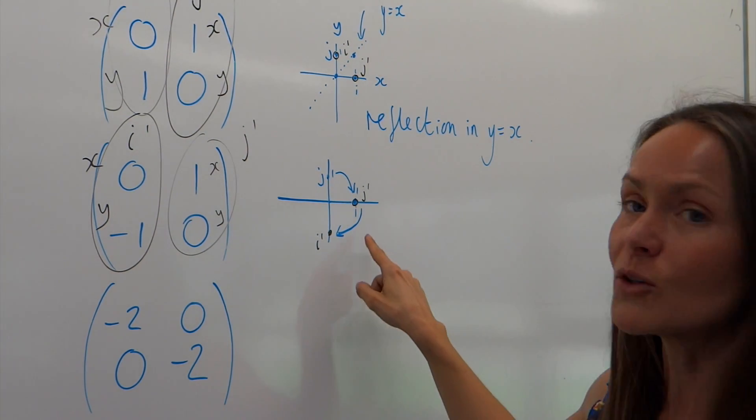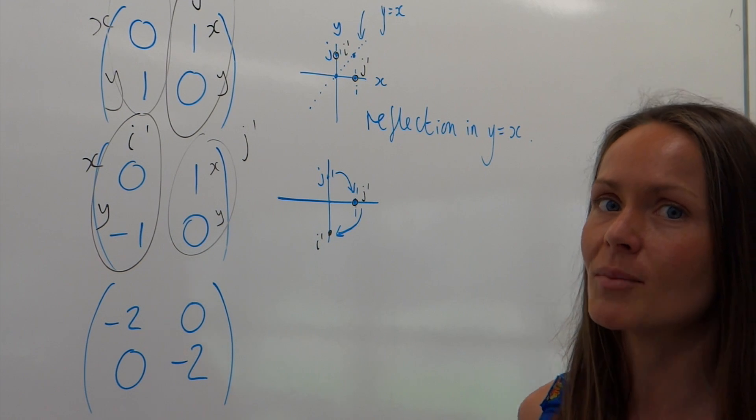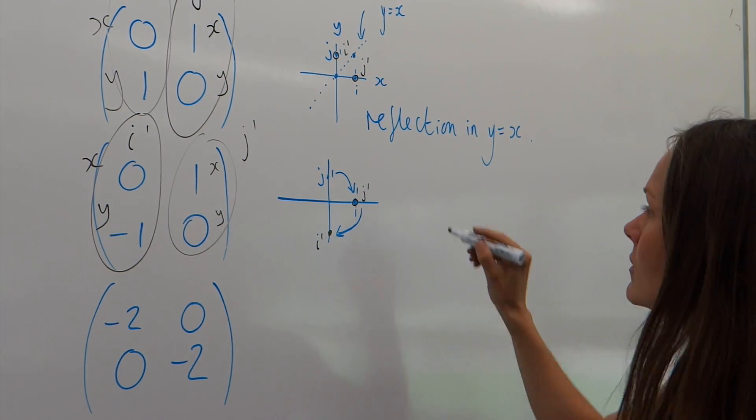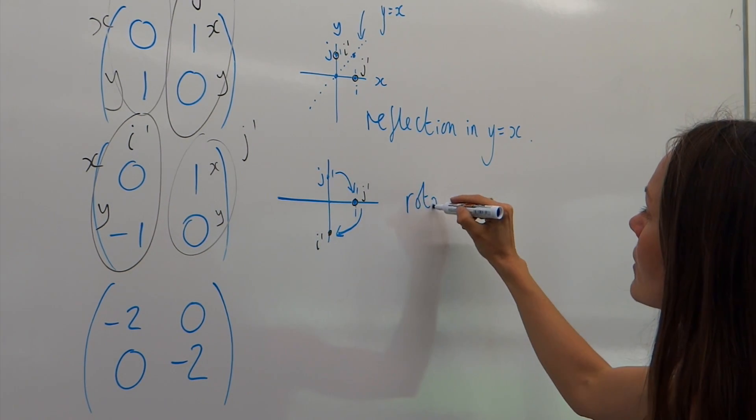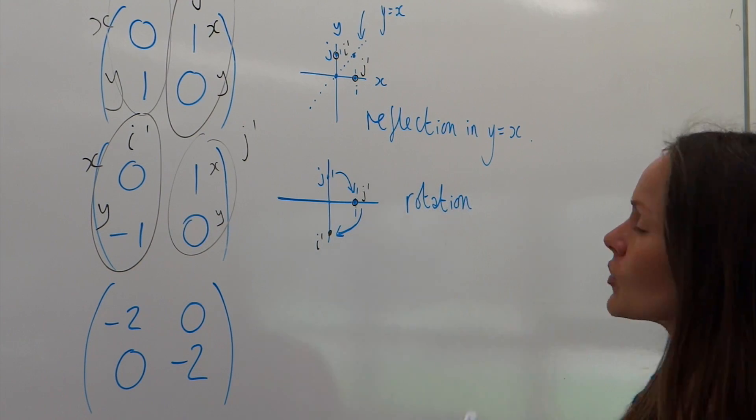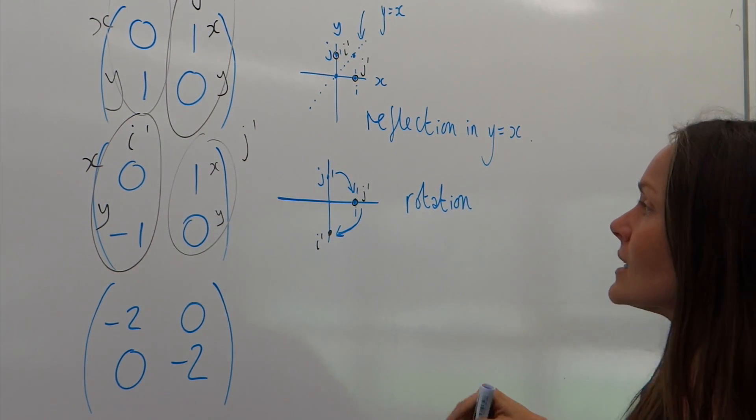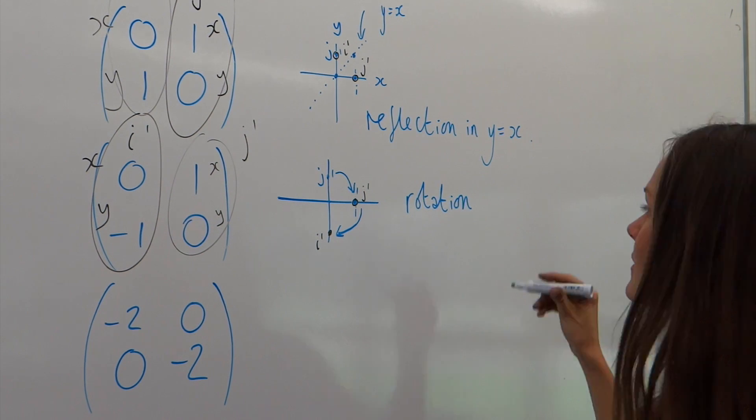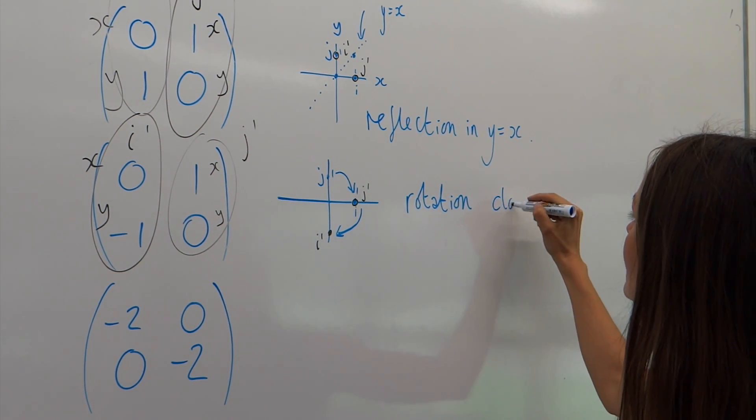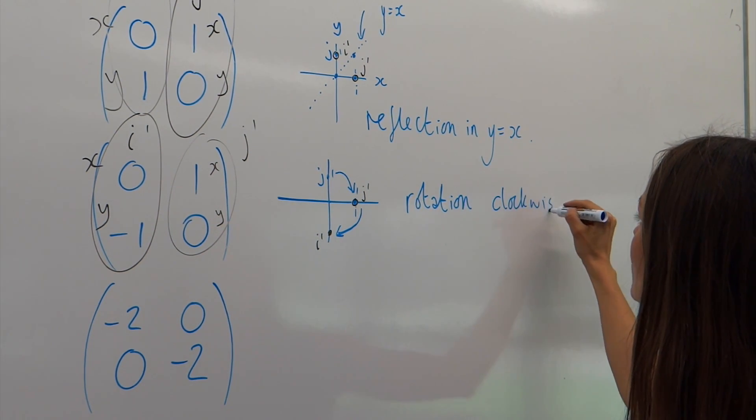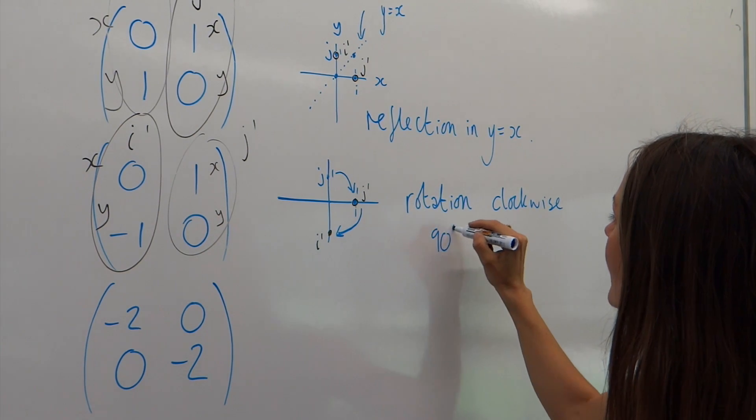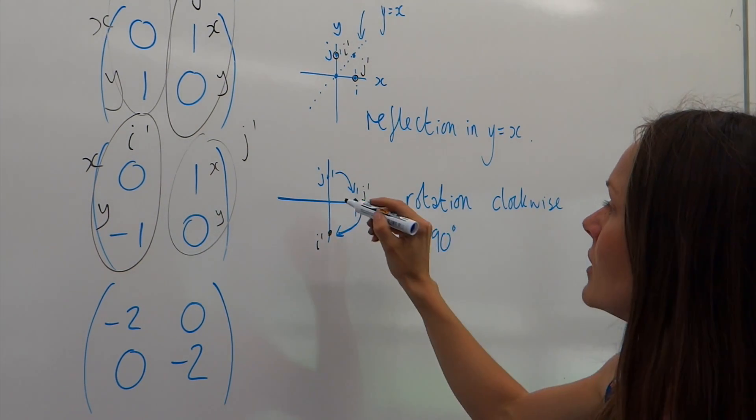Now that I've drawn those arrows in, you can probably guess which type of transformation this is. It's a rotation. So, that will get you one mark. But we can't just write rotation. We have to describe the transformation fully. So, it's rotated clockwise, and it's rotated 90 degrees.